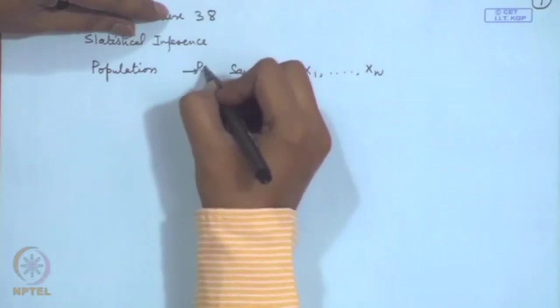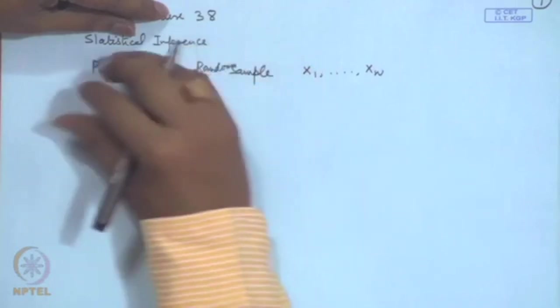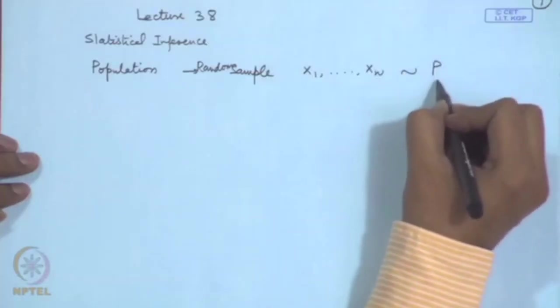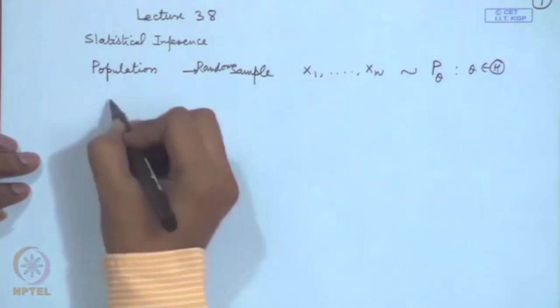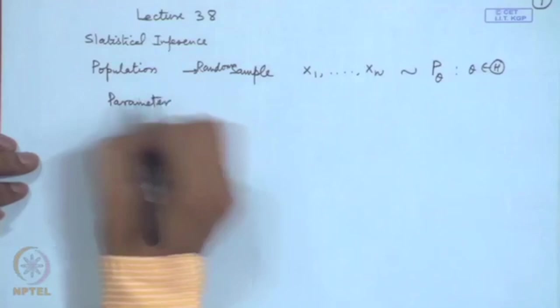When we make the assumption that it is a random sample, that means each unit of the population has the same probability of being selected. Then, for whatever distribution the population has, each observation has the same distribution — we say each has a probability distribution p_θ, where θ belongs to parameter space Θ. Here θ denotes the parameter of the population, which is in general unknown. For example, a normal distribution has two parameters μ and σ². A Poisson distribution has parameter λ. In general, the problem of inference relates to making a certain statement about the unknown parameter of the population.